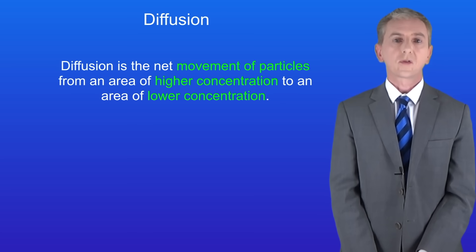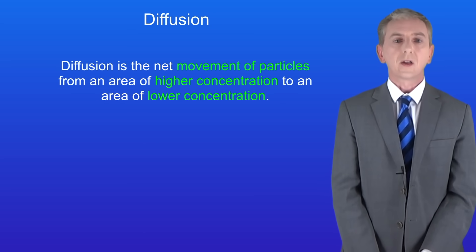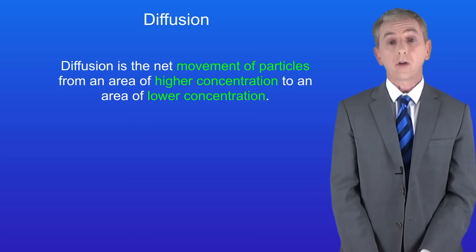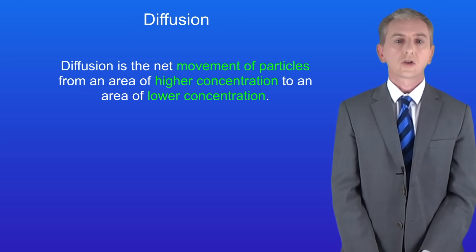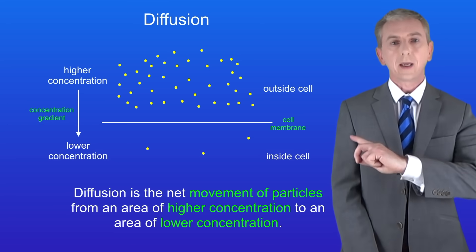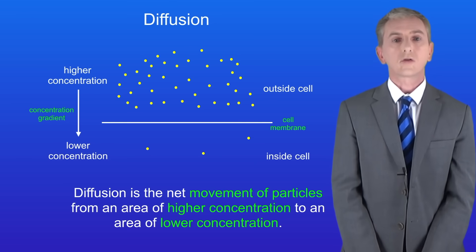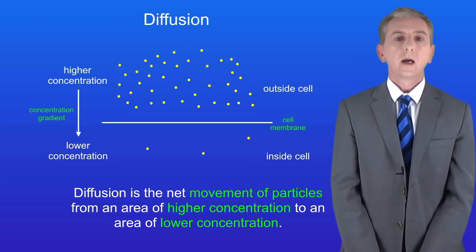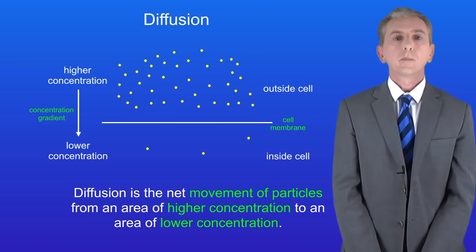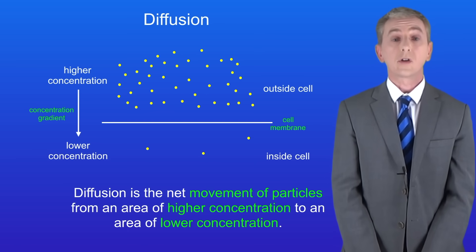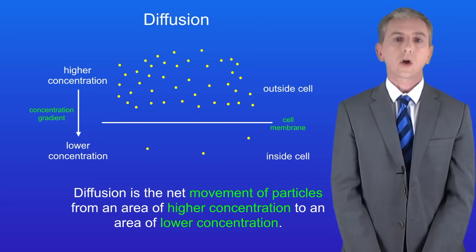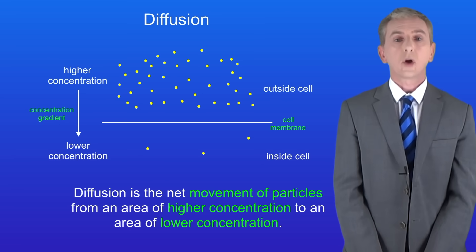We've already seen how substances move by diffusion. Diffusion is the net movement of particles from an area of higher concentration to an area of lower concentration — the word 'net' just means overall. Here I'm showing a cell membrane with a high concentration of particles on one side and a low concentration on the other, which scientists call a concentration gradient. There'll be a net movement of particles by diffusion down the concentration gradient.